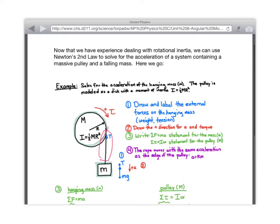So here's what we do. I kind of set this up as a four-step process. First step, draw and label the external forces on the hanging mass. How many forces are there? Two. What are they?